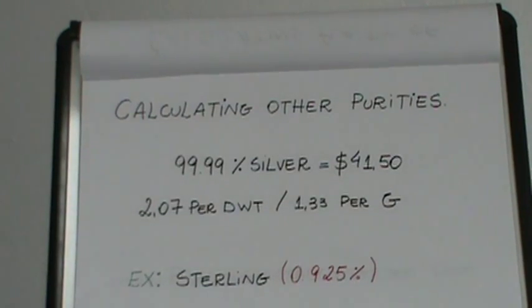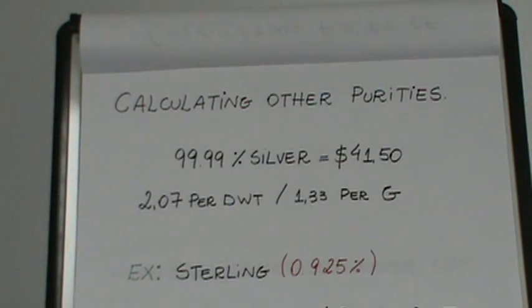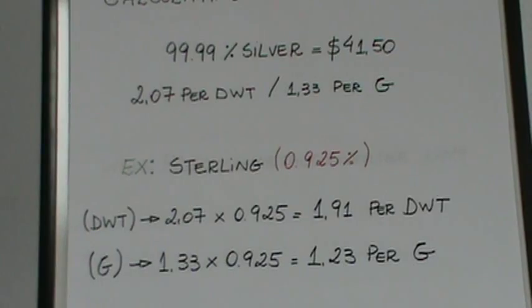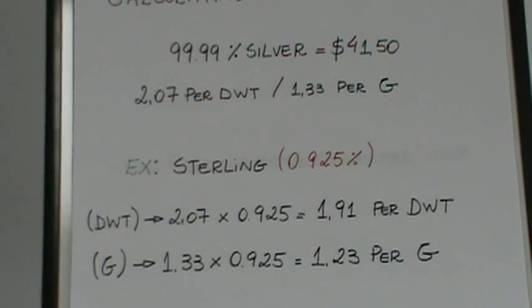Let's do some other calculations for silver here. We're going to use the same numbers as the previous page. And we know sterling is 92.5% silver. So we take the full value of silver, which is $2.07 per pennyweight, and times that by 0.925. And we come out with $1.91 per pennyweight. So for every pennyweight of sterling silver you have, when silver is trading at $41.50, the approximate value is $1.91.